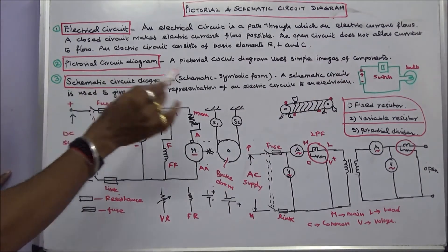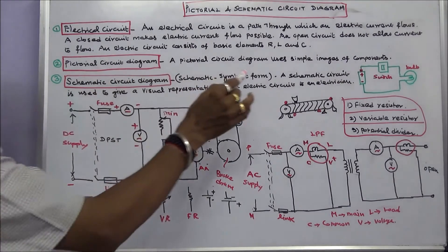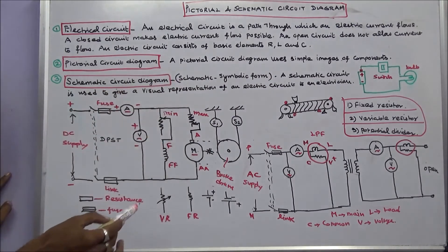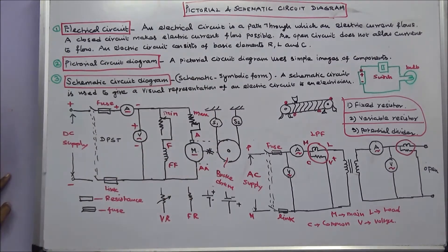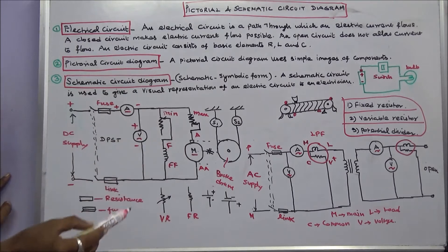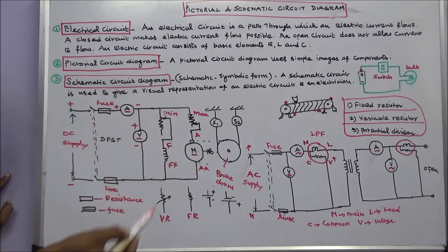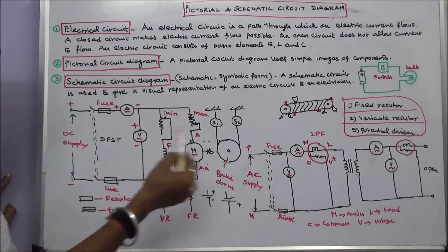The third is schematic diagram. Schematic means symbolic form. A schematic is used to give a visual representation of an electric circuit to an electrician. The people, those who know something about electrical engineering, they can easily understand this because they know the symbols. If you know the symbols, you can easily understand what is this circuit.